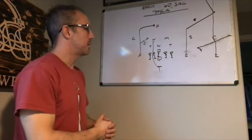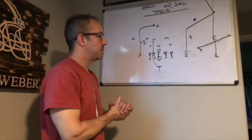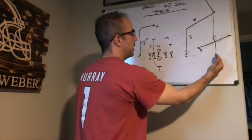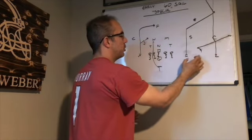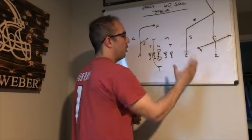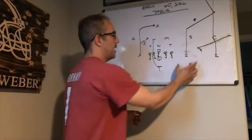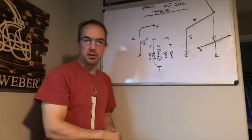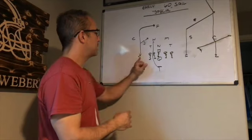One thing I didn't go over was alignment in the trips to the field. The Z is always going to be on the numbers or just inside depending on the route he's running. Generally we want the Y almost always right on the hash or one yard outside the hash, and then the F is going to split the difference no matter where that is.